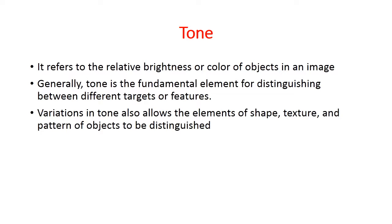Tone refers to the relative brightness or color of objects in an image. Tone is the fundamental element for distinguishing between different targets or features. Variation in tone allows the elements of shape, texture, and pattern of objects to be distinguished. For example, if there is a road and a river, based on the color of the radiation we can distinguish between whether it is a road or a river.